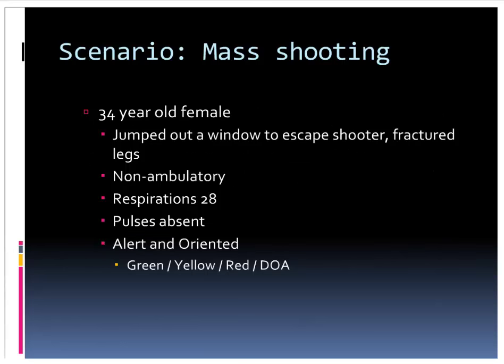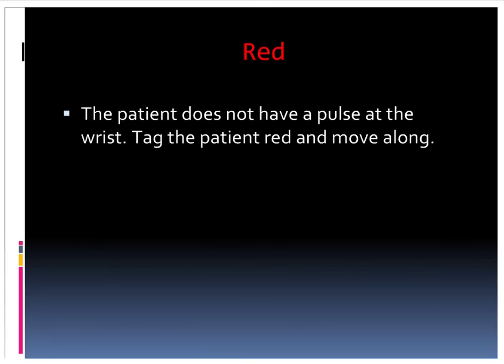A 34-year-old female jumped out of a window to escape the shooter and broke both legs. She's not able to walk, breathing 28 times per minute, has no pulse at her wrist, and is able to follow commands. That's a red patient. The fact that she has no pulse at her wrist tells us her blood pressure is probably fairly low and she needs to be a priority for transport.